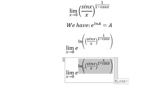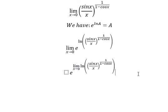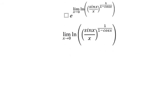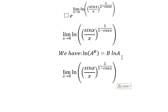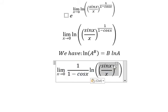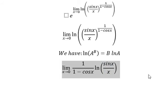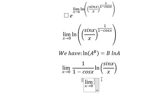Now we need to find the limit of this one only, so I will put this limit in here. I will concentrate on this part. Next, we have the second formula: ln(A to the power of B) equals B·ln(A). So I will put this exponent outside, in front of the natural log.